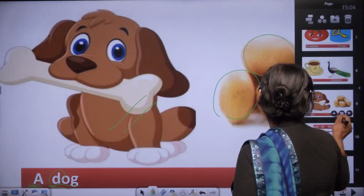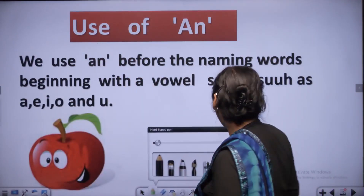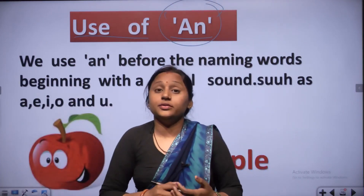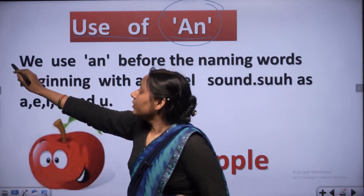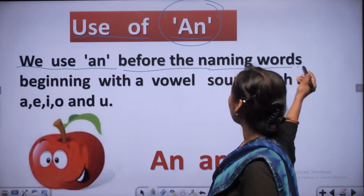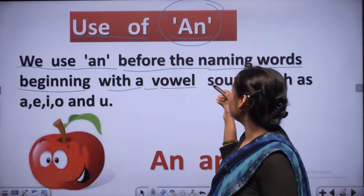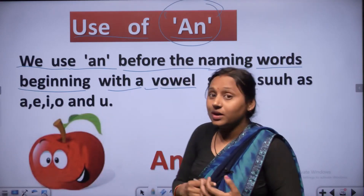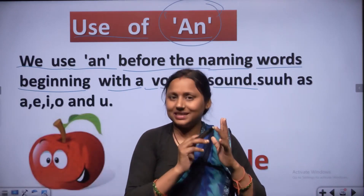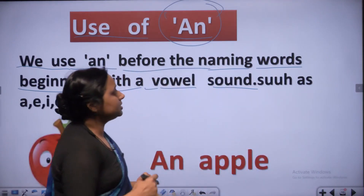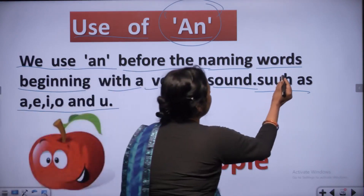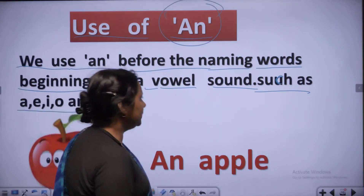Now we learn use of AN. We use AN before naming words beginning with a vowel sound. Beginning with a vowel sound - there are five vowel sounds: A, E, I, O, U. Words starting with vowel sounds take AN.